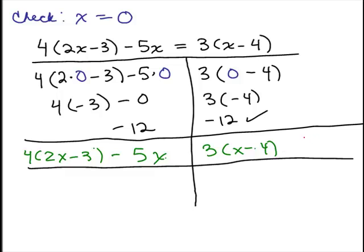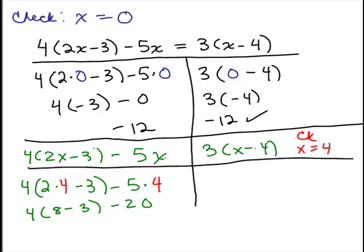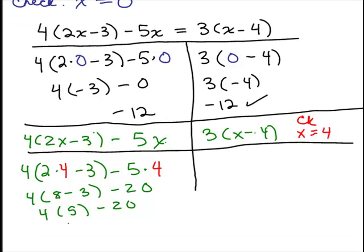How about x equals 4? So we will plug in 4 for x and we'll just simplify this left-hand side. So that's 8 minus 3 in parentheses, and 5 times 4 is going to be 20. That gives us 4 times 5 minus 20. So that will give me 20 minus 20, which is zero. So on the left-hand side, I ended up getting zero.